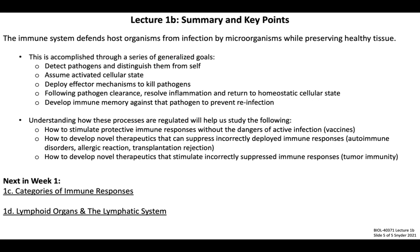To summarize some key points from today, I want you to focus on this overall concept that the immune system has evolved to defend the host from infection, and that these activities need to be balanced by mechanisms that preserve healthy tissue — again, this is the concept of immunological self-tolerance. We can accomplish this through a series of generalized goals of the immune response shared by most types of immune cells, involving detection, activation, the deployment of effector mechanisms, the resolution of inflammation, and with certain cell subsets, the formation of immunological memory. I hope that this lecture has established why the study of these immunological processes can inform the design of therapies aimed at treating a vast variety of diseases, including vaccines used to prevent infections, pathologies where the immune system is inappropriately activated such as autoimmunity, allergy, and transplantation rejection, and settings where the immune system needs to be reactivated such as in tumor immunology. This wraps up our first lecture, so please remember to watch the remaining two introductory lectures for week one, which cover categories of immune responses as well as immune organs, which we refer to as lymphoid organs.